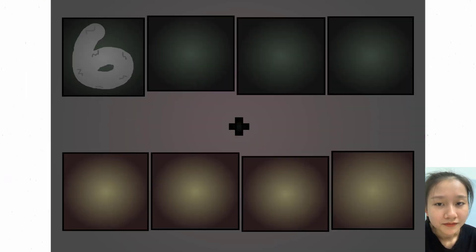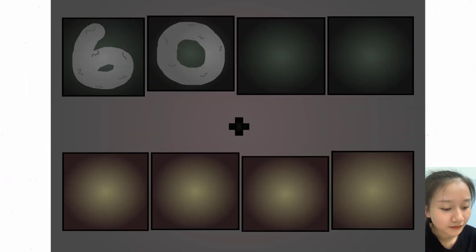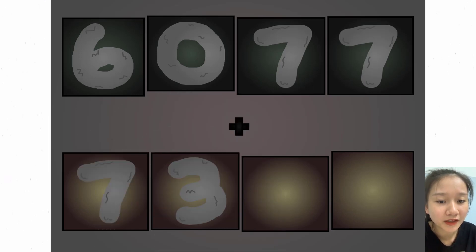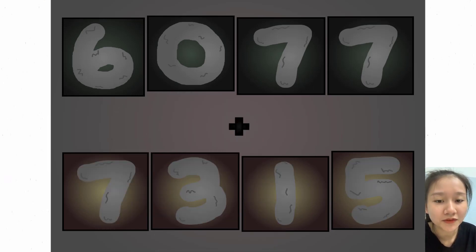Six thousand seventy-seven, plus seven thousand three hundred fifteen, equals...